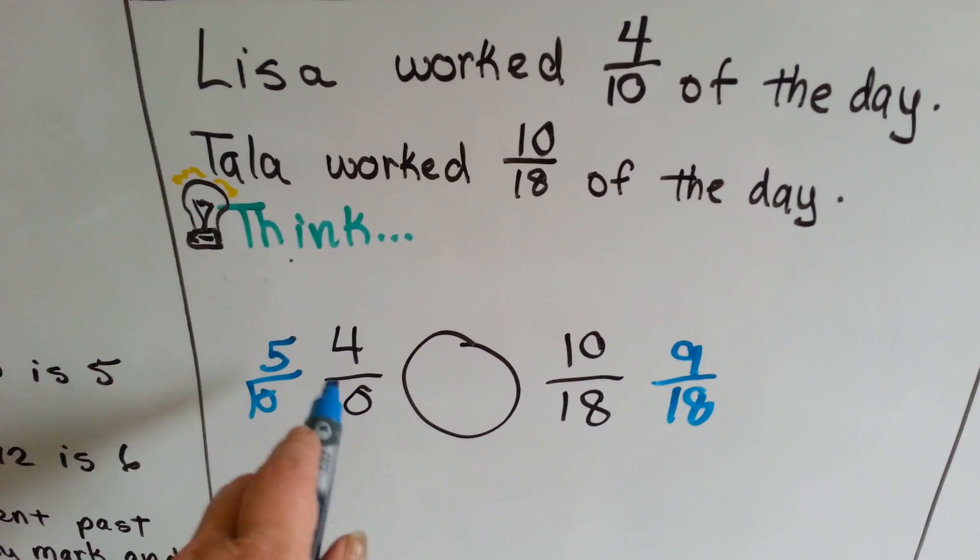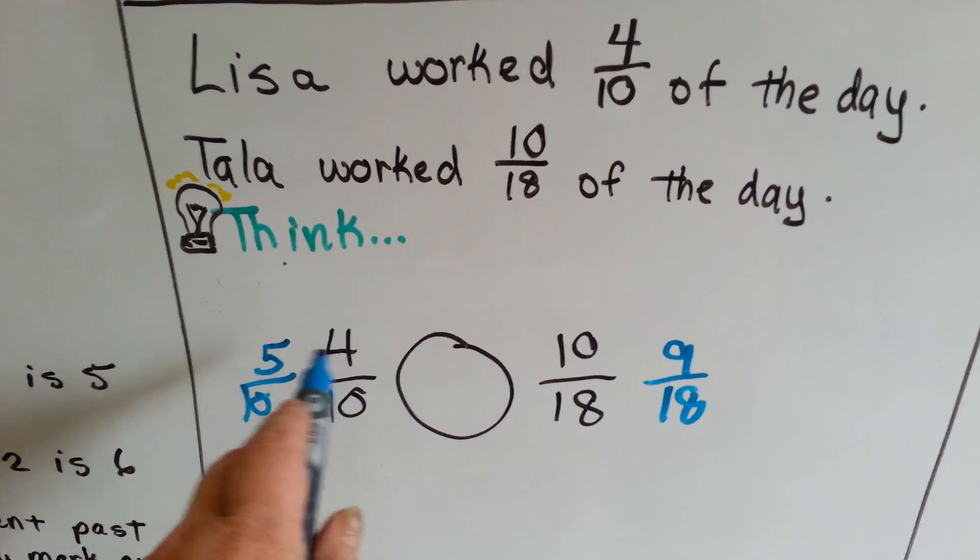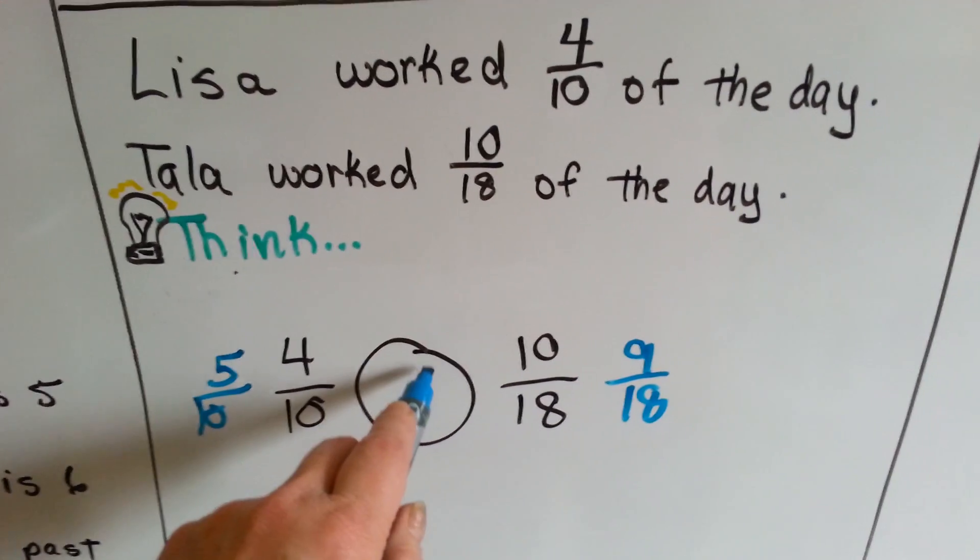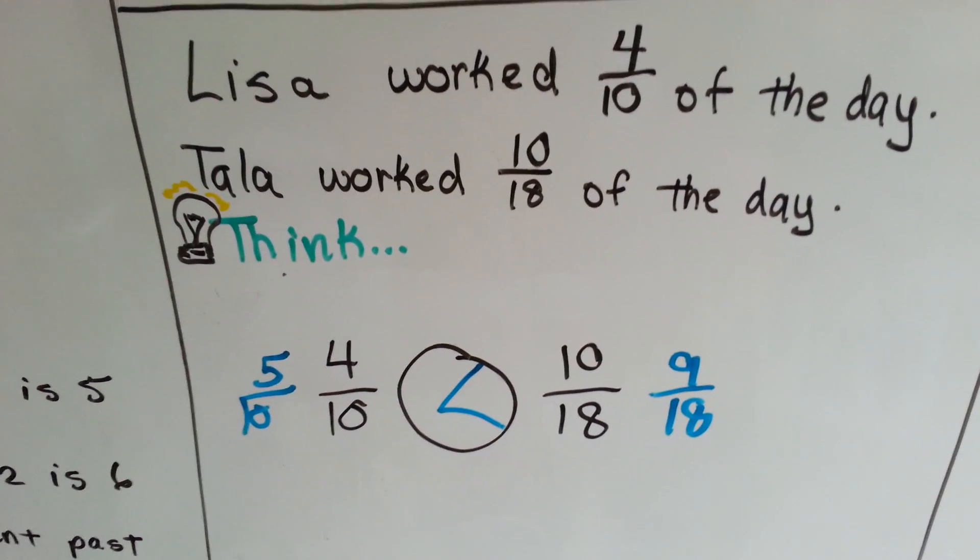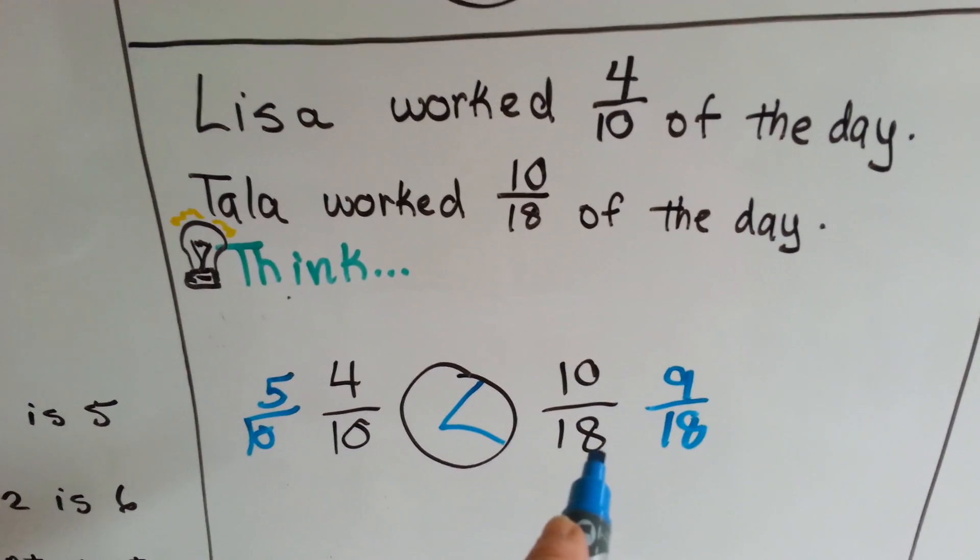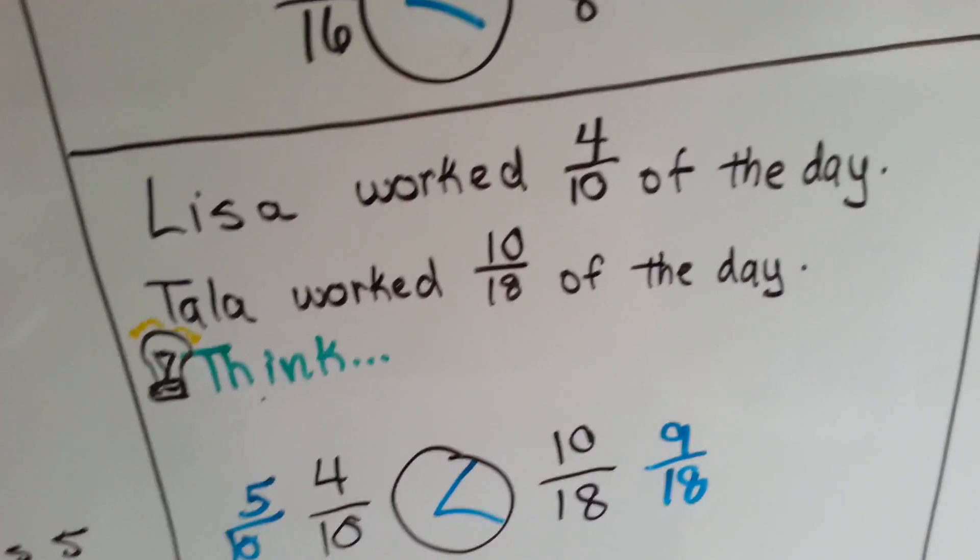Can you see who worked more? She didn't quite work half the day yet. See, she's just under half. She is 1 over half. So Tala worked probably another hour or so more than Lisa did. See that? 10 eighteenths is greater than 4 tenths.